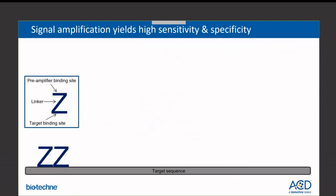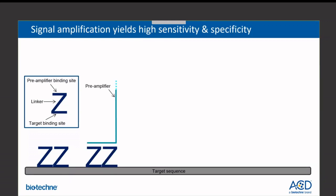The first key feature of the RNAscope technology is the probe design. We depict the oligonucleotide target-specific probes as Z-shaped, emphasizing that they have two regions linked by a spacer. Each oligonucleotide sequence has been designed using an informatics algorithm that selects sequences to specifically bind physically to the target sequence and not cross-hybridize with any other sequences. The bottom of the Z hybridizes to the target transcript. For amplification to occur, two Zs must hybridize to the target sequence right next to each other. The top of the Z is the base for the amplification structure.